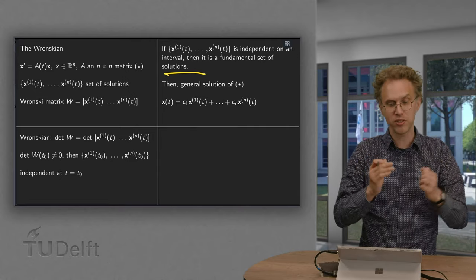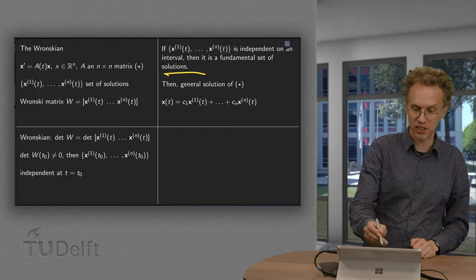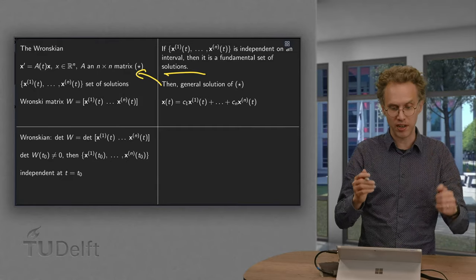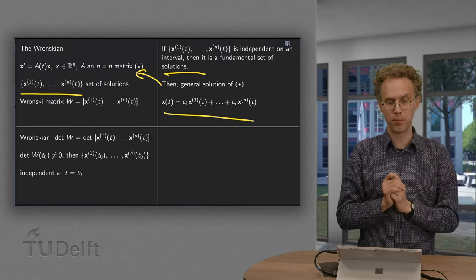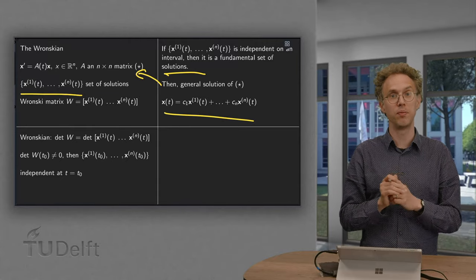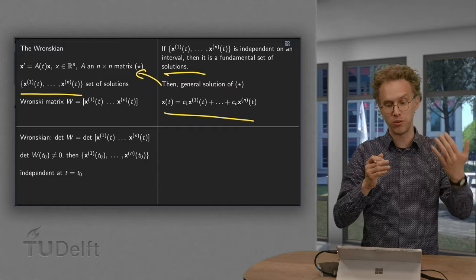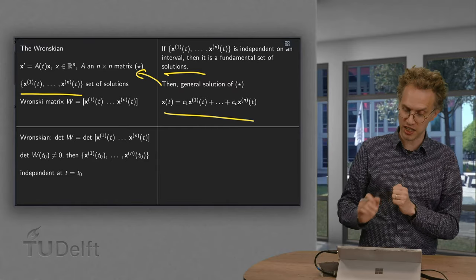Now if you have a fundamental set of solutions, then the general solution of this problem is given by the linear combination of the solutions we found. The general solution of this problem equals c_1 times x^(1) plus c_2 times x^(2) up to c_n times x^(n).